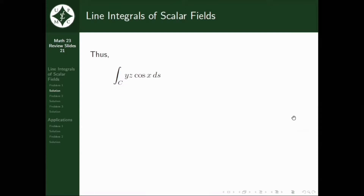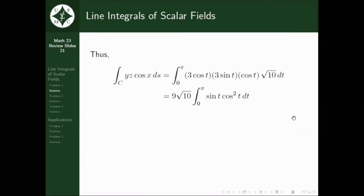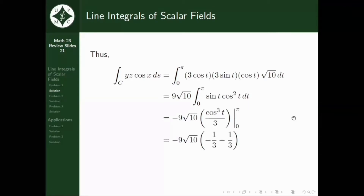We know that sine squared t plus cosine squared t equals 1, so this expression is just equal to the square root of 10. Evaluating the given line integral, this equals the integral from 0 to pi of 3 cosine t times 3 sine t times cosine t times square root of 10 dt, which simplifies to 9 square root of 10 times the integral of sine t cosine squared t dt from 0 to pi. Using u-substitution, this equals negative 9 square root of 10 times (negative one-third minus one-third), which simplifies to 6 square root of 10.